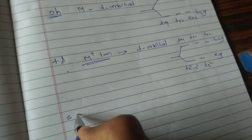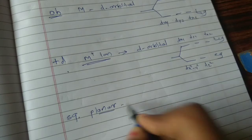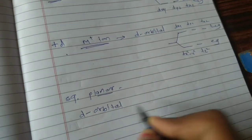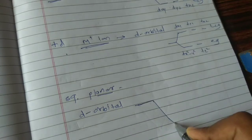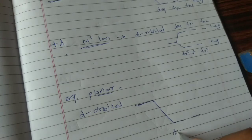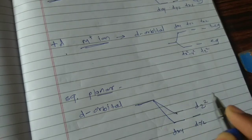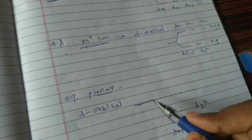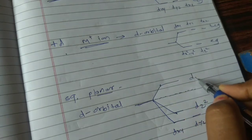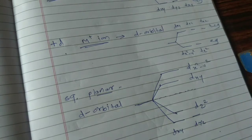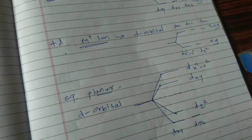Next is square planar complexes — how the energy is distributed. In square planar complexes, the d orbitals distribute their energy in the following manner. At the lowest energy there are two orbitals: DXZ and DYZ. Above that is the DZ2 orbital, then above that is the DXY orbital, and the highest energy orbital is DX2-Y2. This is the splitting pattern for octahedral, tetrahedral, and square planar complexes, which is very important for identifying the physical properties of the metal centre in a protein.